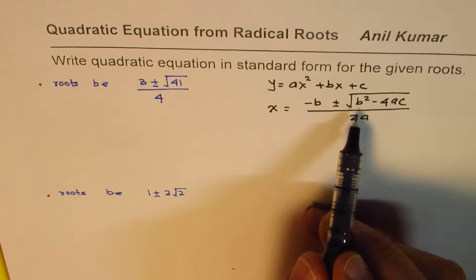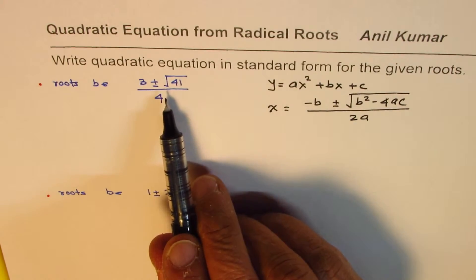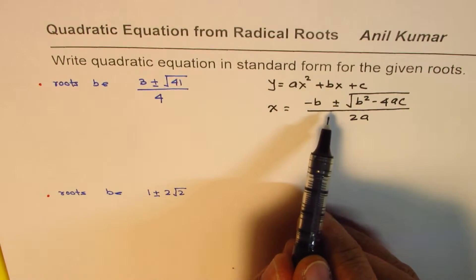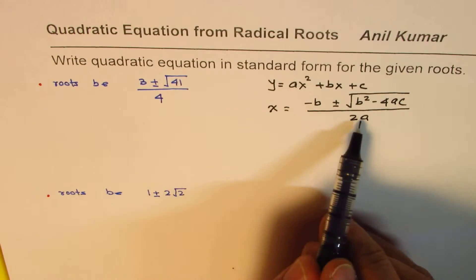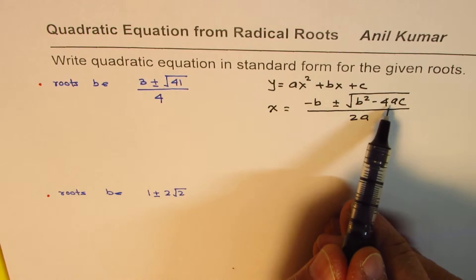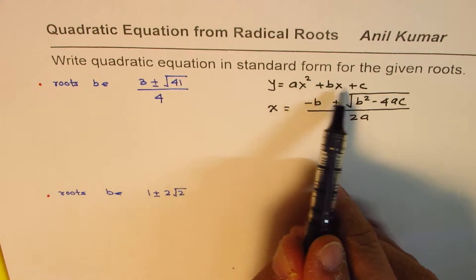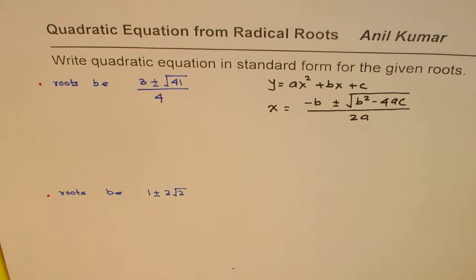The idea here is: if we are given the roots, we can write those roots and compare them with this quadratic formula. Once we compare, we have the a, b, c values, and we can substitute those values back into the equation.